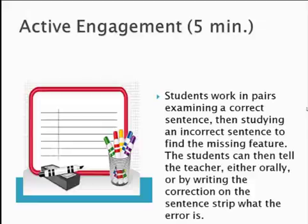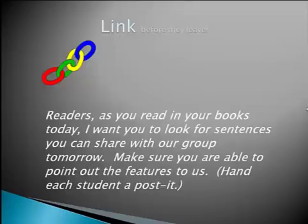During the active engagement portion, students will work in pairs examining a correct sentence, then studying an incorrect sentence to find the missing feature. The students can tell the teacher either orally or by writing the correction on the sentence strip. Before the formative assessment piece and releasing students back into reading workshop, we want to link: 'Readers, as you read in your books today, I want you to look for sentences you can share with our group tomorrow. Make sure you are able to point out the features to us.' Then give each student a post-it to use in their book.